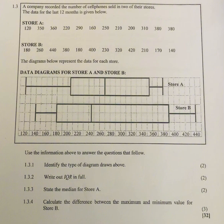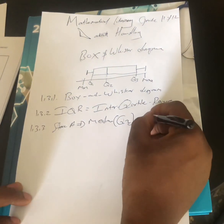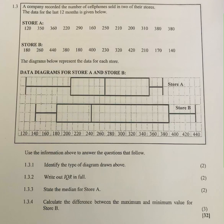Question 1.3.3 says: state the median for Store A. We have already discussed this. Store A's median, or Q2, is equal to 270.